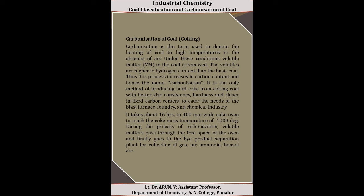Next is the carbonization of coal, also called coking. Carbonization is the term used to denote the heating of coal to high temperatures in the absence of air. Under these conditions, the volatile materials present in the coal are removed. The volatiles are higher in hydrogen content than the base coal; this process increases the carbon content, hence the name carbonization. It is the only method of producing hard coke from coking coal with better size, consistency, hardness, and richer fixed carbon content to serve the needs of blast furnaces and the chemical industry. The coking process takes about 16 hours in a 400 mm wide coke oven to reach a coke mass temperature of 1000°C.